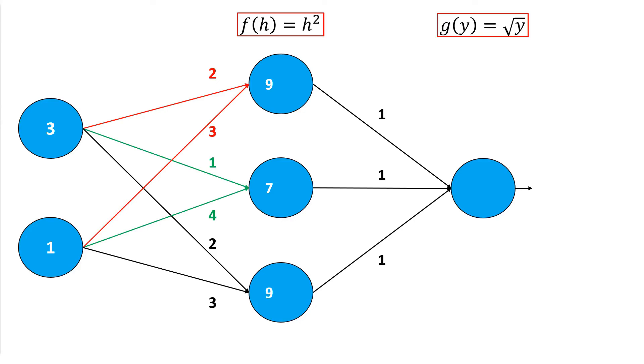You can see here the function stays the squared function for this example. So we have for h1 the output is 9 times 9, which is 81. For h2, 7 times 7, which is 49. And one time again, 9 times 9, which is 81.